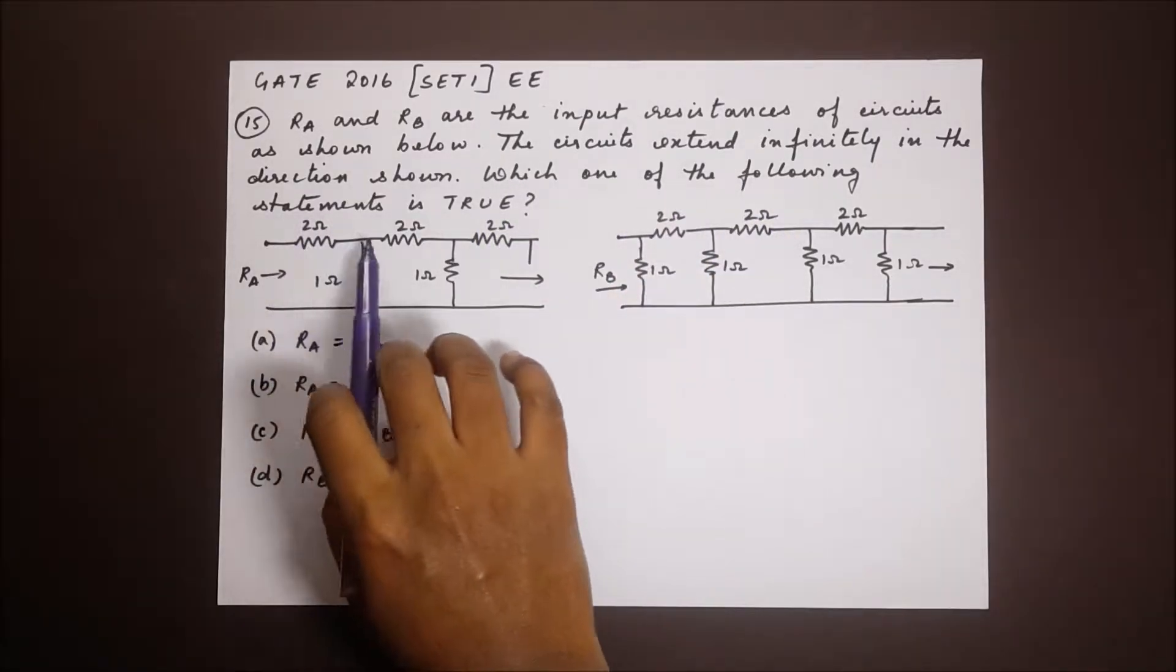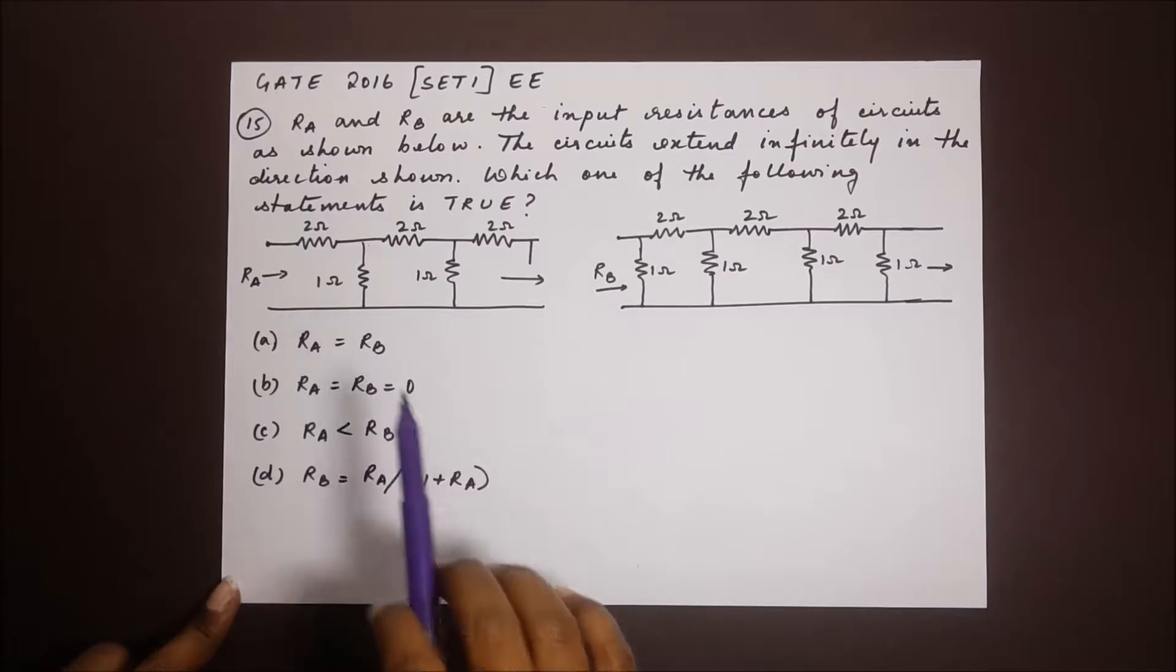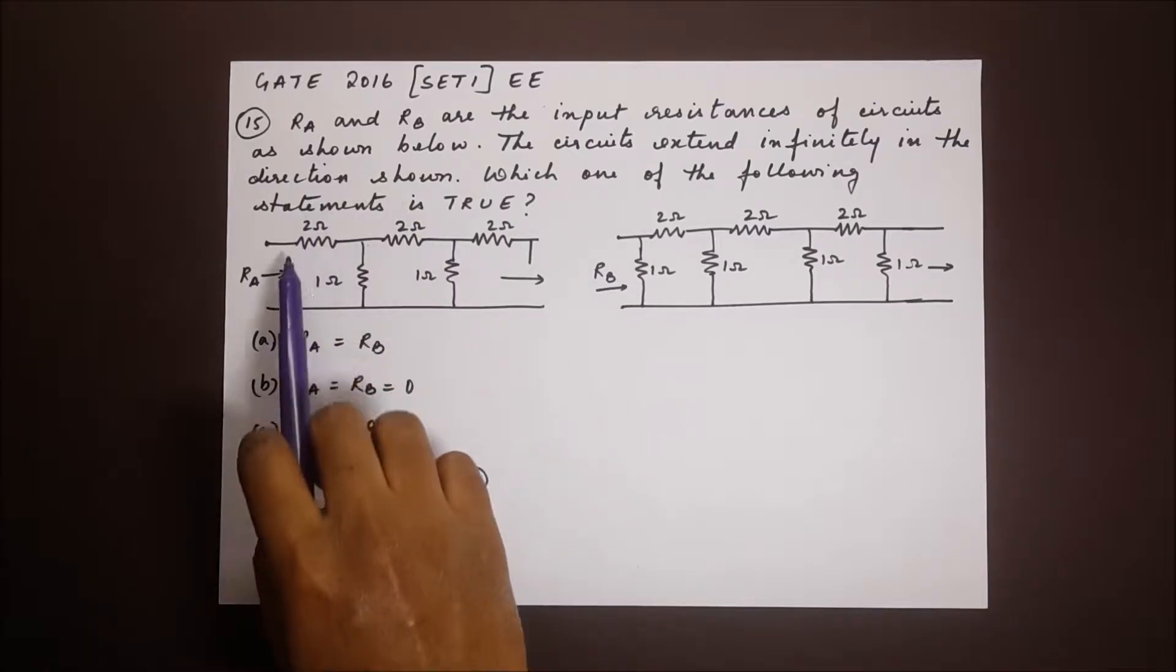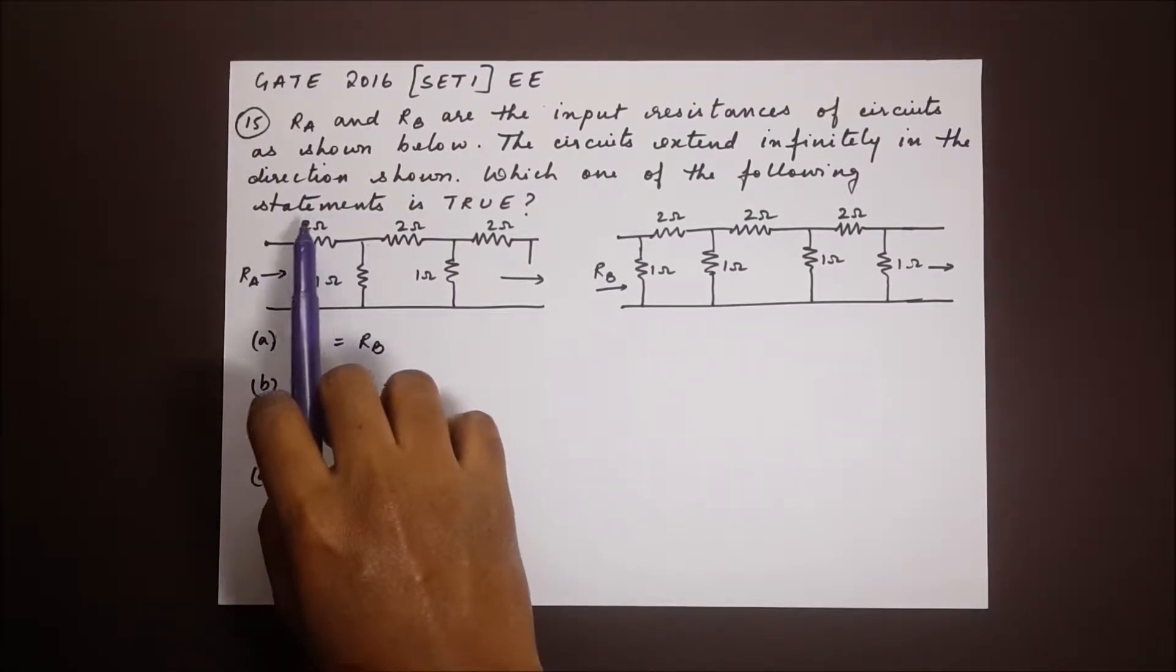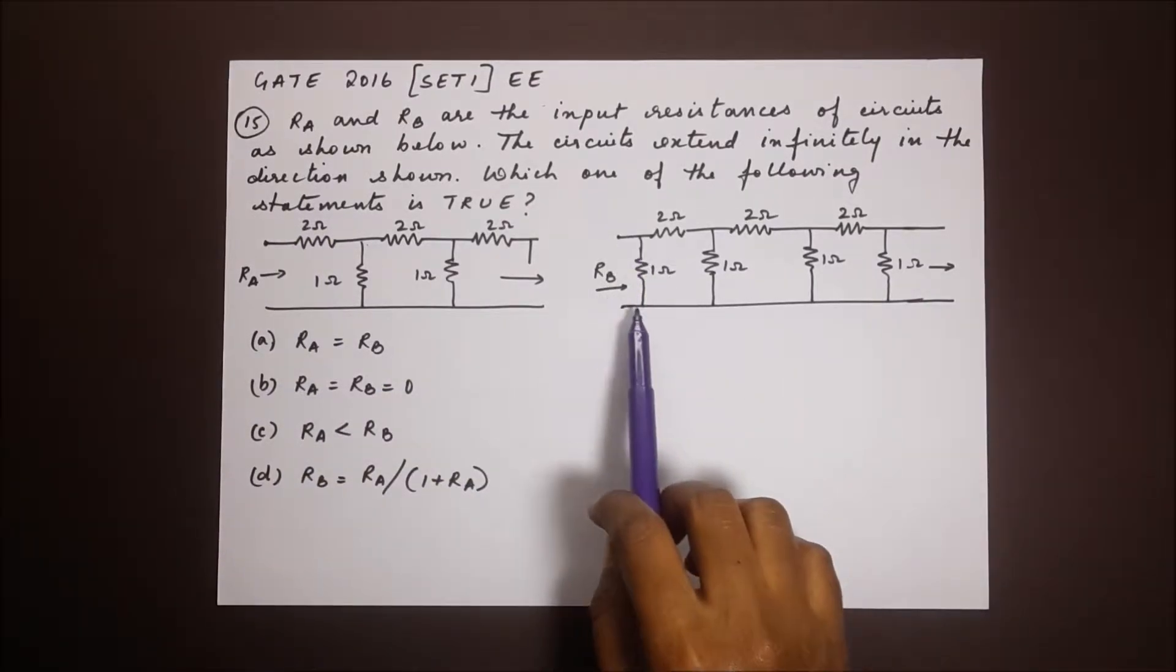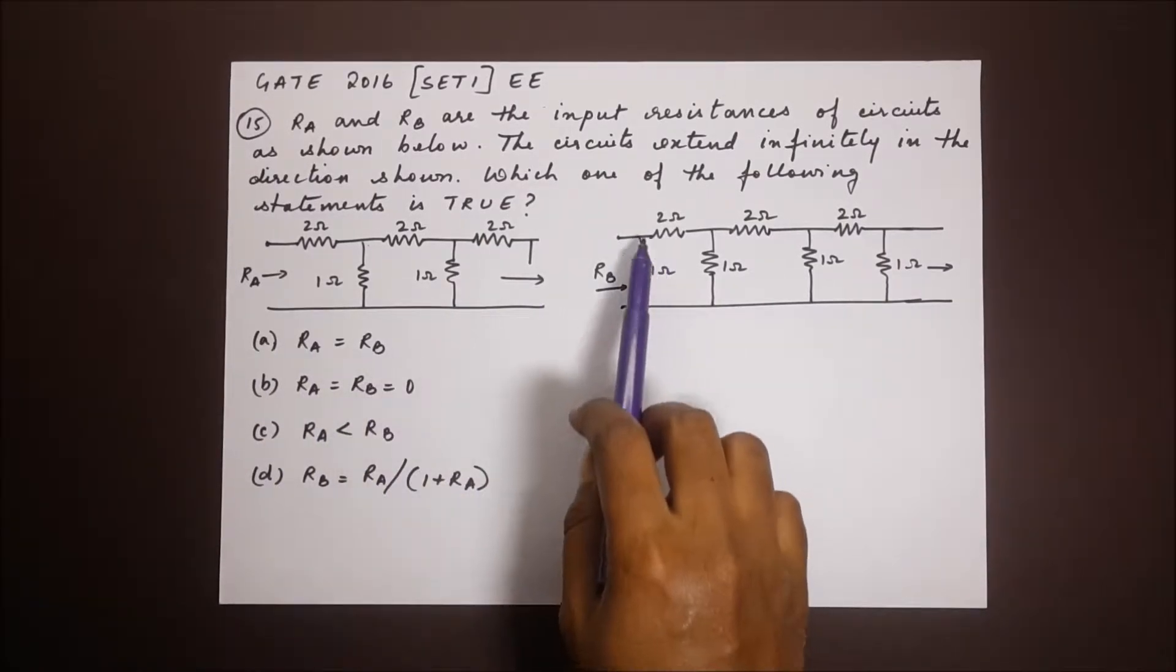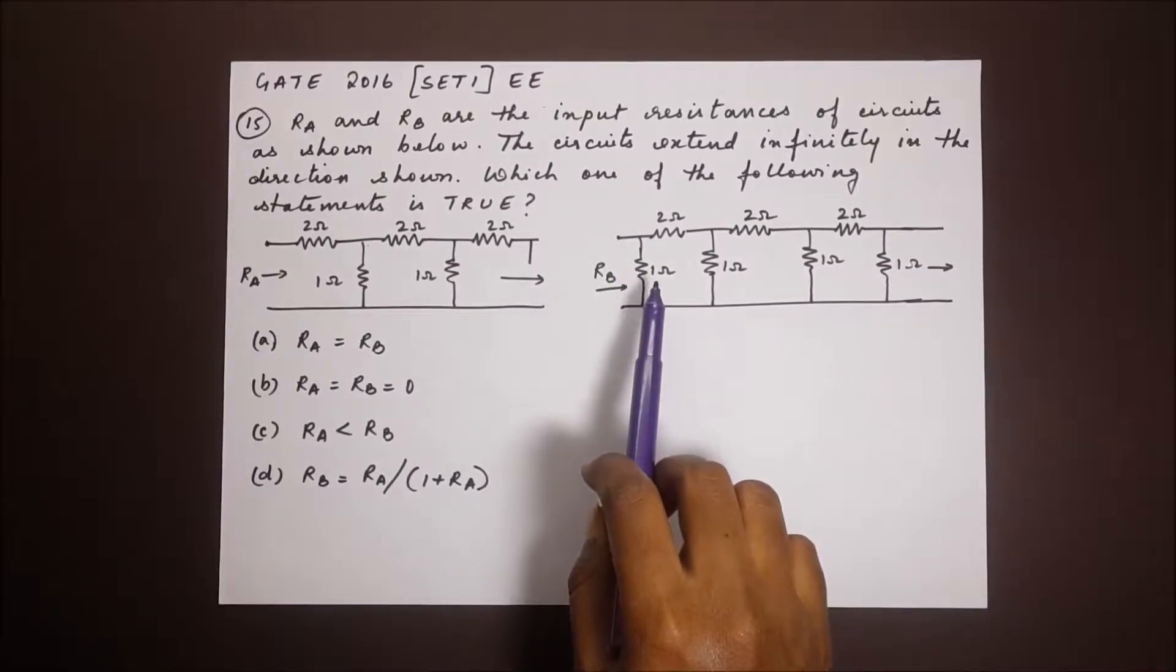Which one of the following statements is true? RA equals RB. Now let's analyze both of them. Now we clearly see that there is a difference, right? So here the circuit starts off with a two ohm resistor on top. But here it starts off with a one ohm resistor between the two points. So they are not equal. RA cannot be equal to RB because it has an extra resistance in the start over here.